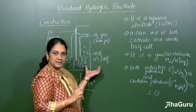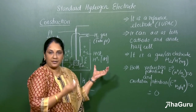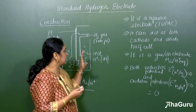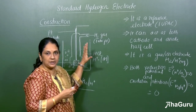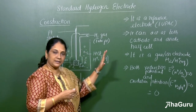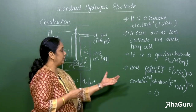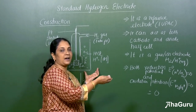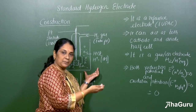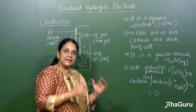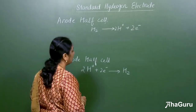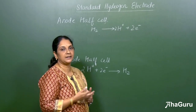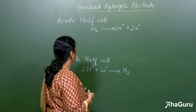When we connect this to any half cell, we can find the potential of that half cell because the standard hydrogen electrode potential is kept as zero. The other half cell potential can be easily determined at any temperature, since both the oxidation potential and reduction potential of the SHE are taken as zero.